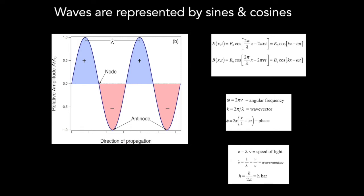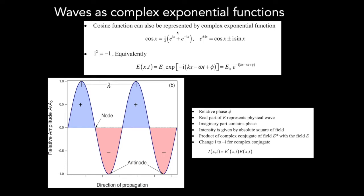We can represent waves using sines and cosines. Taking a cosine wave, we can represent how the electric and magnetic fields oscillate in space and time, either in terms of wavelength and frequency or by introducing the angular frequency and wave vector for a more compact notation with an electric field amplitude. Alternatively, we can express waves as complex exponential functions. A cosine can be represented as e to the ix plus e to the minus ix, where i is the square root of minus one.